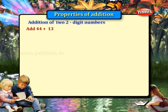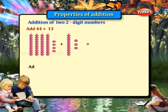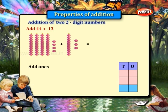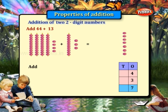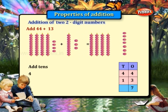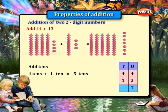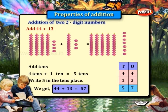44 plus 13. Now we will add the ones first. 3 ones plus 4 ones is equal to 7 ones. Write 7 under the ones place. Next we add the numbers in the tens place: 4 tens plus 1 ten is equal to 5 tens. Write 5 under the tens place. We get 44 plus 13 is equal to 57.